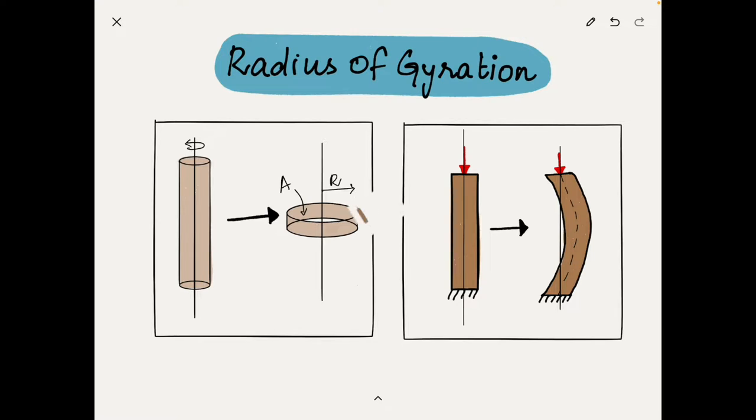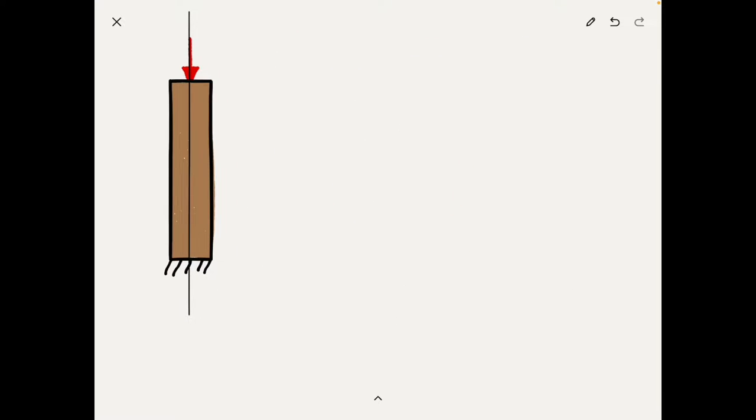So let's start with buckling. Consider a column which is fixed at one end and is subjected to axial load on top. If the load is too much for a column, it will start to bend.